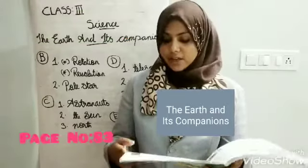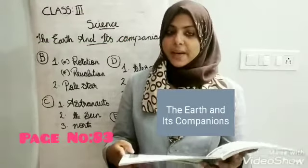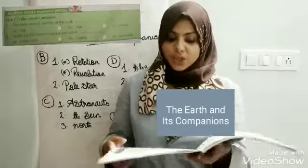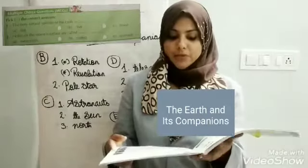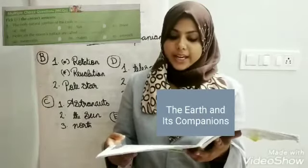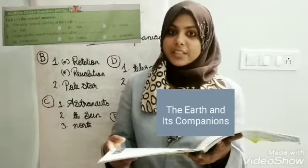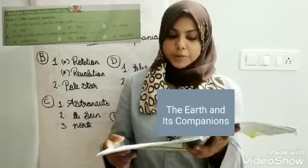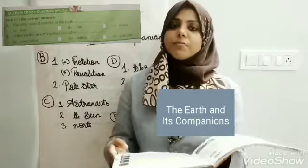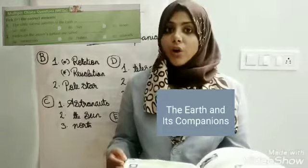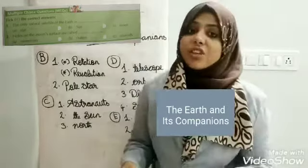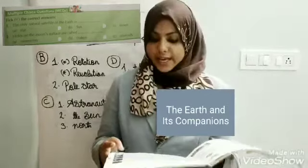Move on to next page, page number 83. Can you see the MCQ question? First question: the only natural satellite of Earth is — Option A: star, Option B: sun, Option C: moon. We know the only natural satellite of Earth is moon.